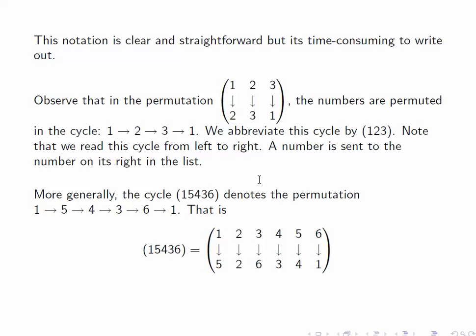So more generally, a cycle like (15436) would denote the map that sends 1 to 5, 5 to 4, 4 to 3, 3 to 6, and 6 to 1. So in our old notation, this would look like this. 1 here is getting sent to 5. Notice that 2 is not involved in the cycle, so it would just be fixed. 3 sent to 6, 4 to 3, 5 to 4, 6 to 1.